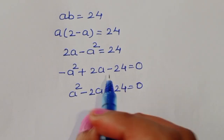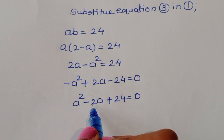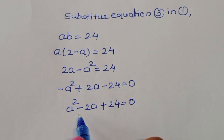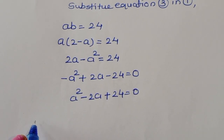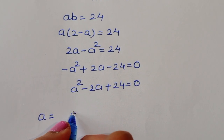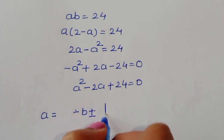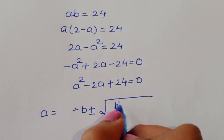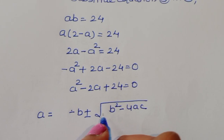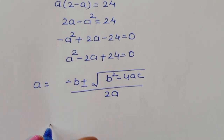In this equation, the coefficient of a squared is 1, b is minus 2, and c is 24. We will use the quadratic formula: a equals minus b plus or minus square root of b squared minus 4ac, divided by 2a.